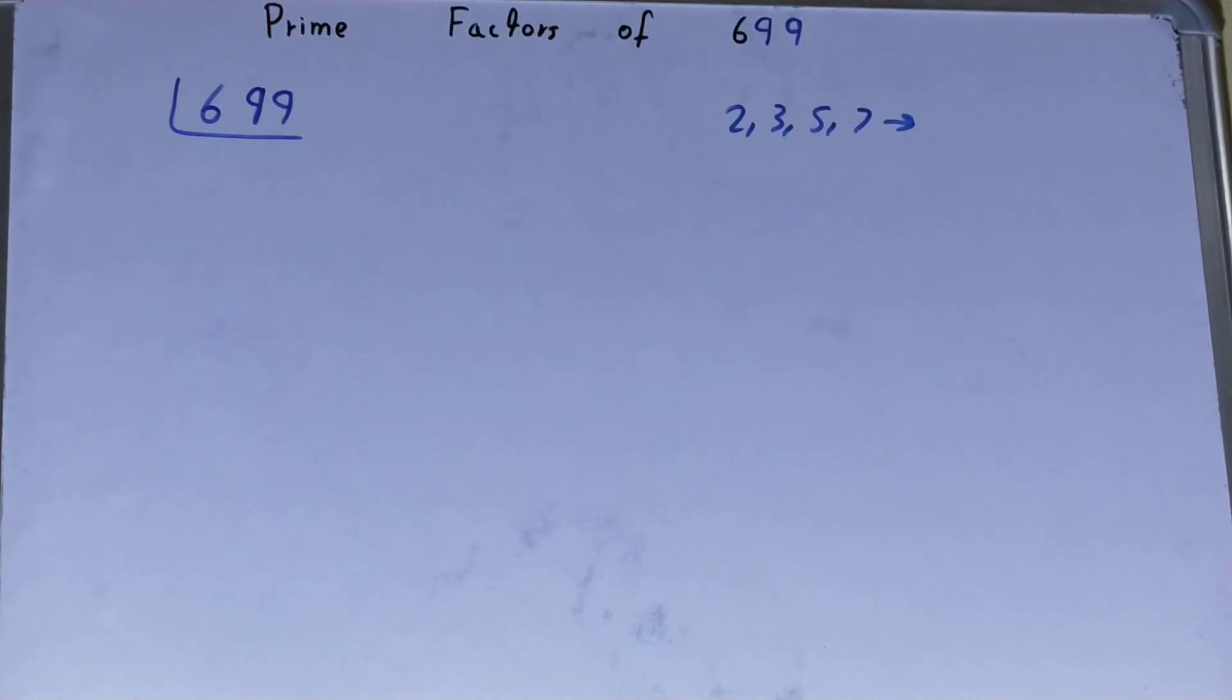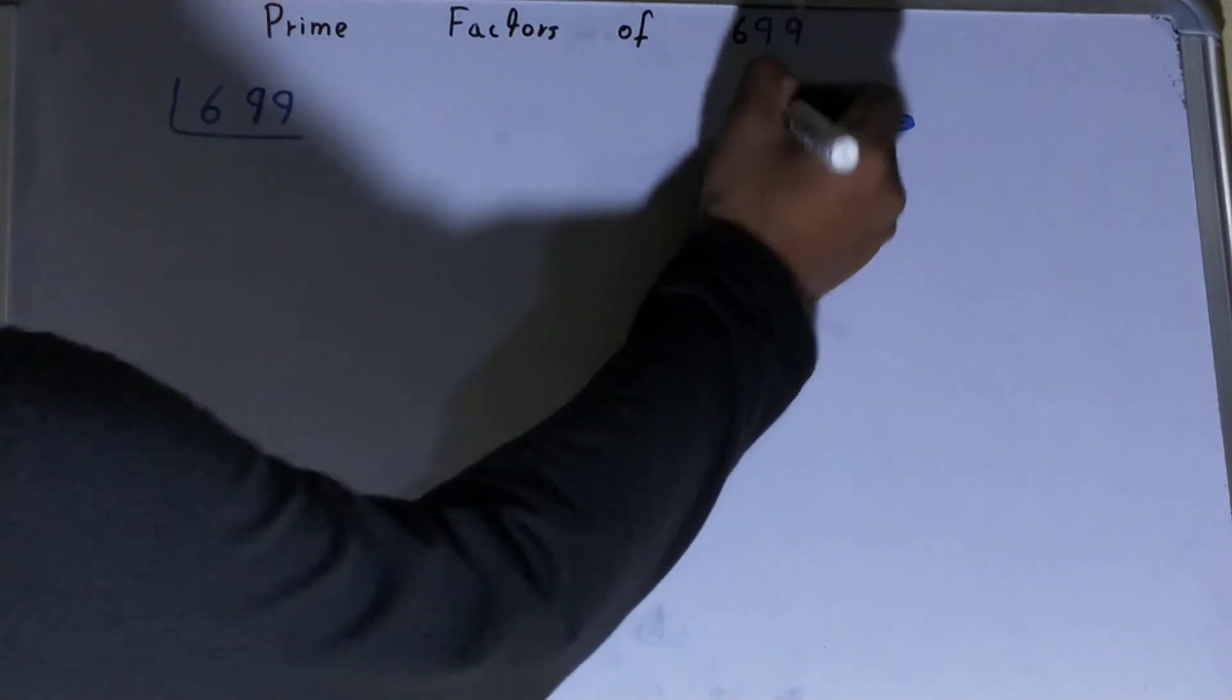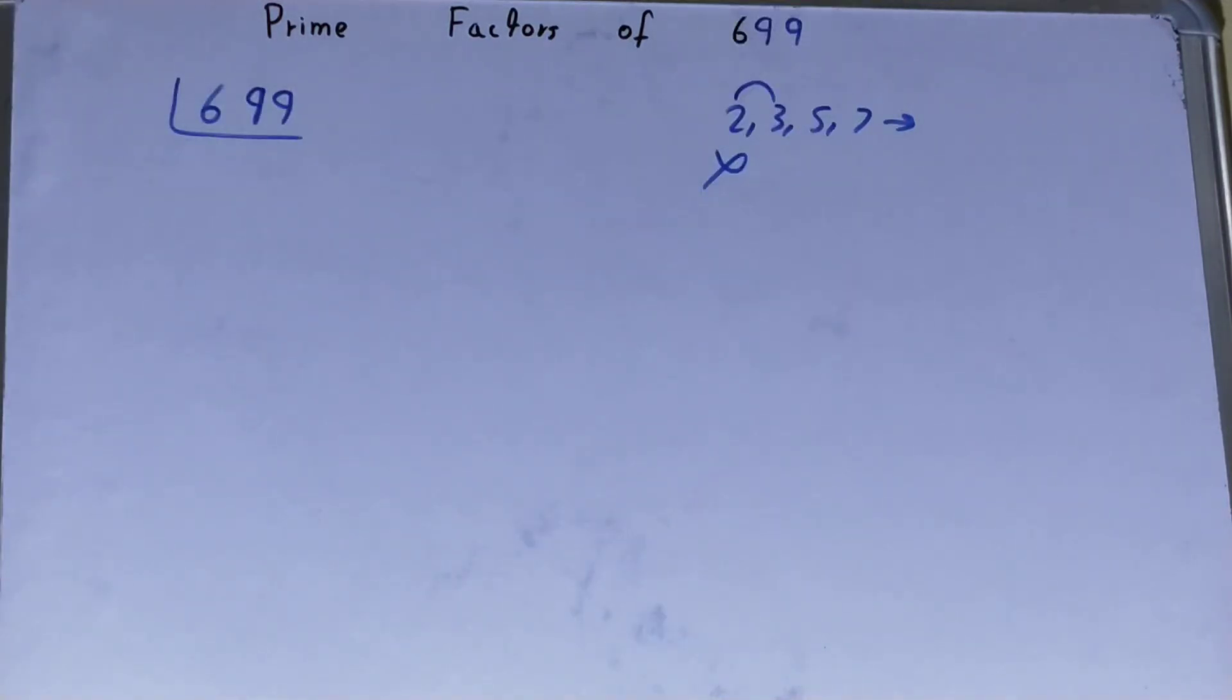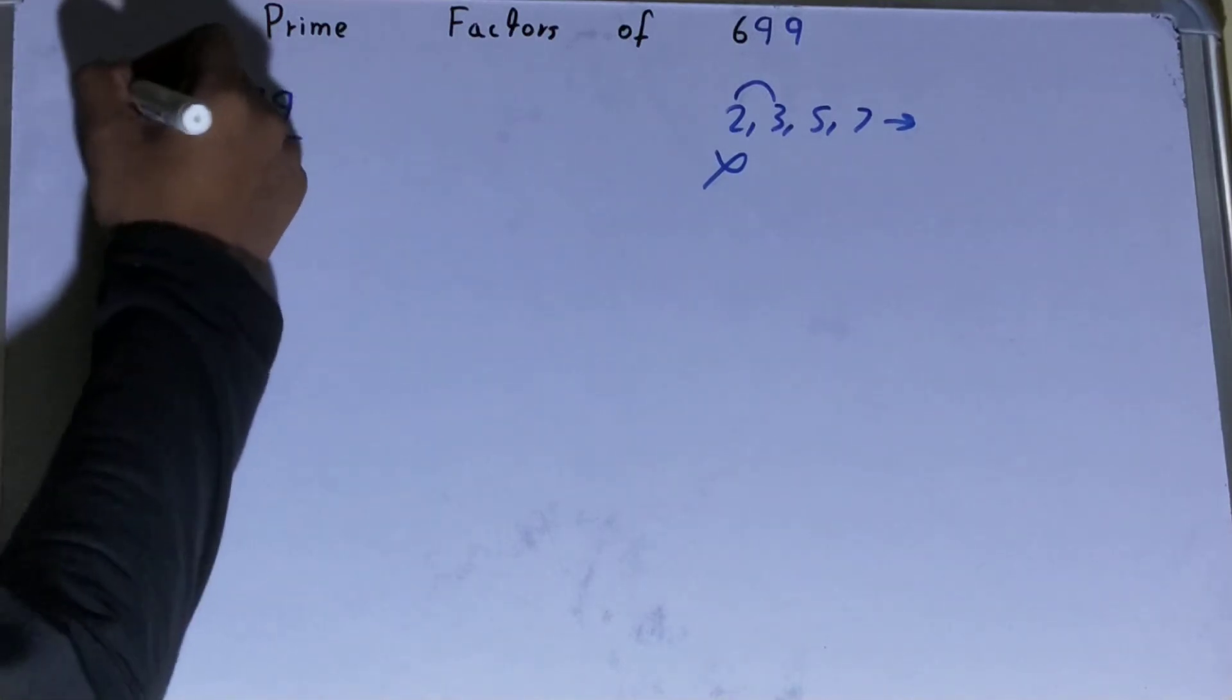Is 699 divisible by 2? Clearly not - 699 is an odd number, so we go to the next lowest prime number, which is 3. Is 699 divisible by 3? Let's check. Yes, it is divisible by 3, so divide it.